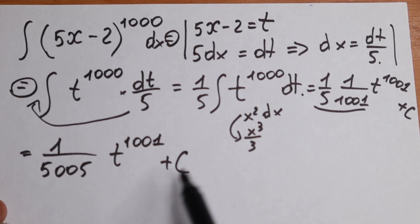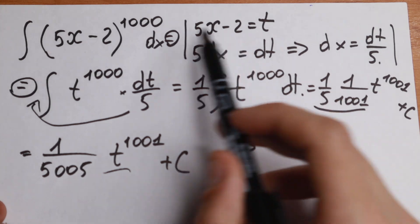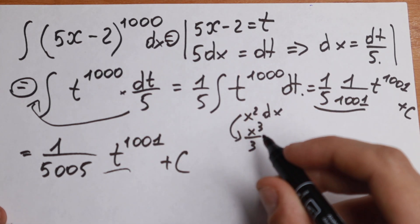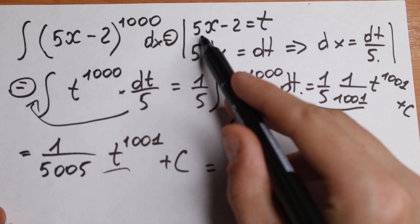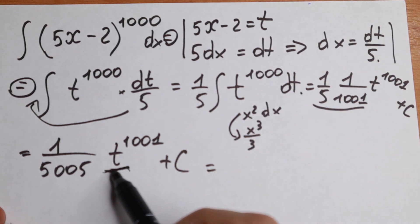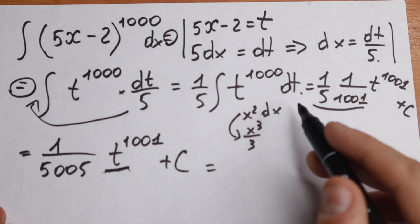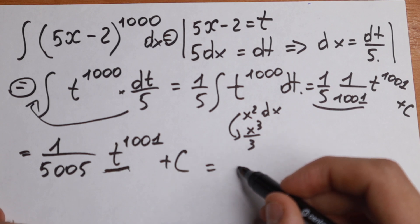And the last step. As you can see, we have t, but we worked with x in the beginning. So we need to change it using our substitution. So 5x minus 2 equal to t. Then we need to change this t via 5x minus 2. We will have our final answer.